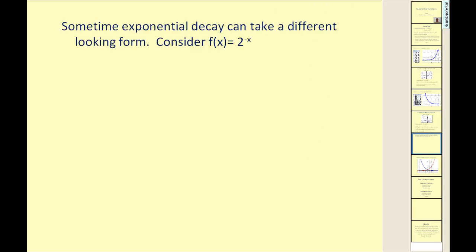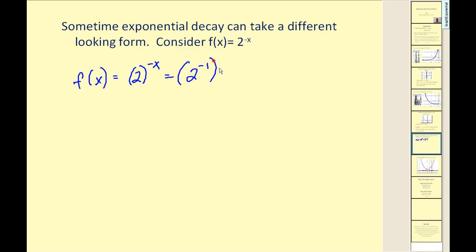Now let's take a moment and look at the function f of x equal to two raised to the power of negative x. Sometimes exponential decay can take this form. I want to show you that this is the same as f of x equal to one-half raised to the power of x. This would be the same as taking two, raising it to the negative one power, and raising that to the power of x.